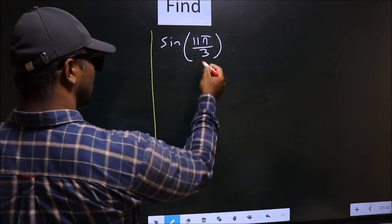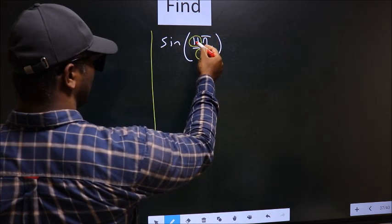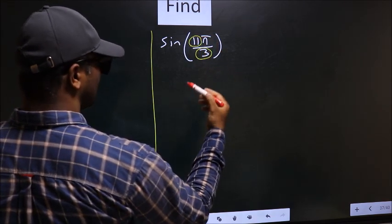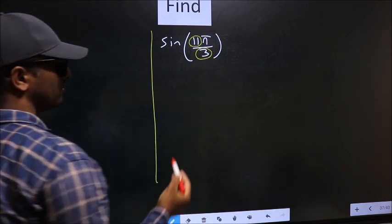First, in the denominator we have 3 and in the numerator we have 11. Now you should look, 11 is close to which multiple of 3.